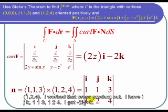So I work that cross product out. I have i, j, k, 1, 1, 3, 1, 2, 4. And what I got was -2i - j + k.